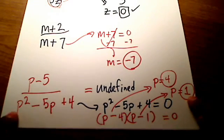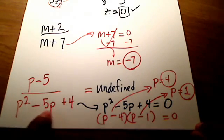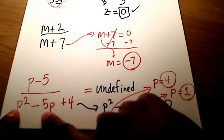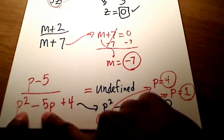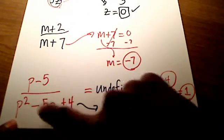Here, try it with a 1. What's 1 squared? 1. What's 5 times 1 here, right here? This negative 5 times 1 is a negative 5. Okay, so I've got 1 minus 5. That's a negative 4. And what's negative 4 plus 4? 0. That would also make my denominator a 0.